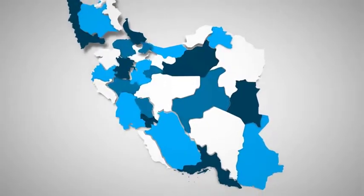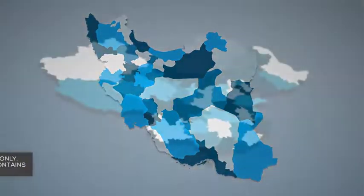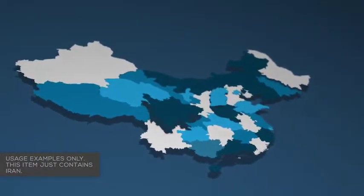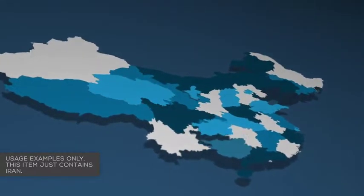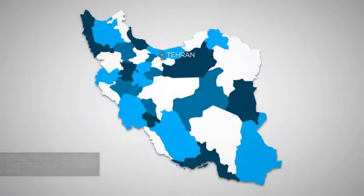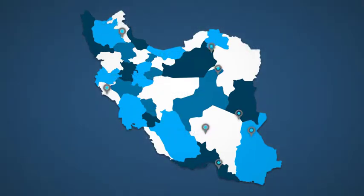Highlight regions with different colors to match your branding and to represent whatever you need the map to represent. Or get creative and add your own animations and images into the texture layers. Includes map markers for pinpointing cities, locations, outlets, and other areas of interest.